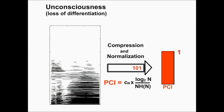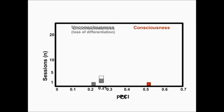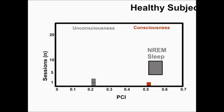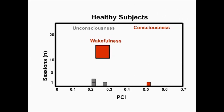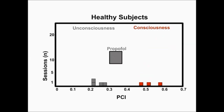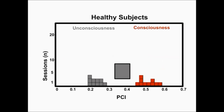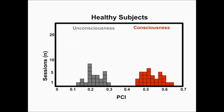So, PCI varies between 0 and 1. As you will see here, we have performed this measure of complexity in both unconsciousness and consciousness in healthy subjects. When subjects are deeply asleep or undergoing general anesthesia using propofol, xenon, or midazolam, the PCI is low, between 0.1 and 0.31. But when subjects are awake and aware, the PCI is high, between 0.45 and 0.7.